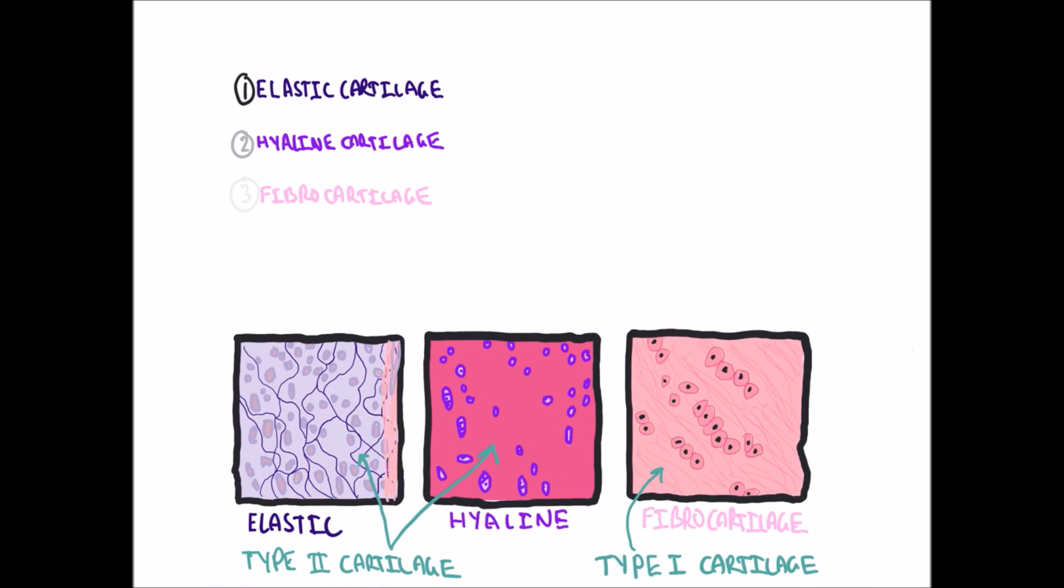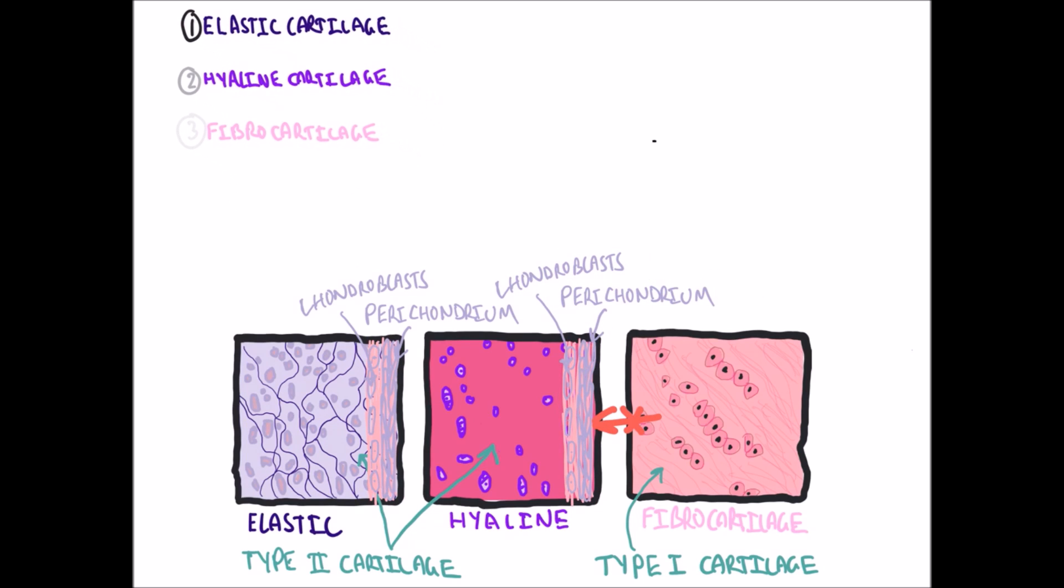Elastic cartilage and hyaline cartilage are surrounded by a perichondrium because of where they are found. Fibrocartilage has no perichondrium. Another clue as to where each type of cartilage is found has been mentioned in the arrangement of fibrocartilage collagen towards the direction of stress.